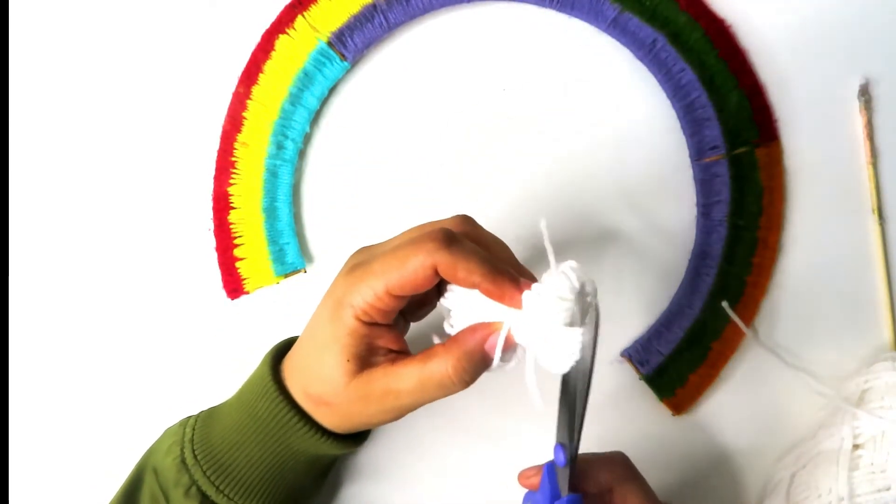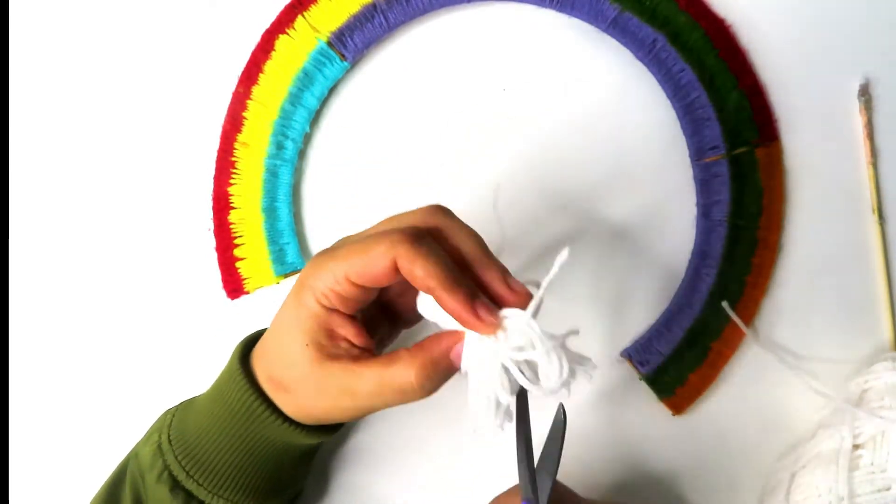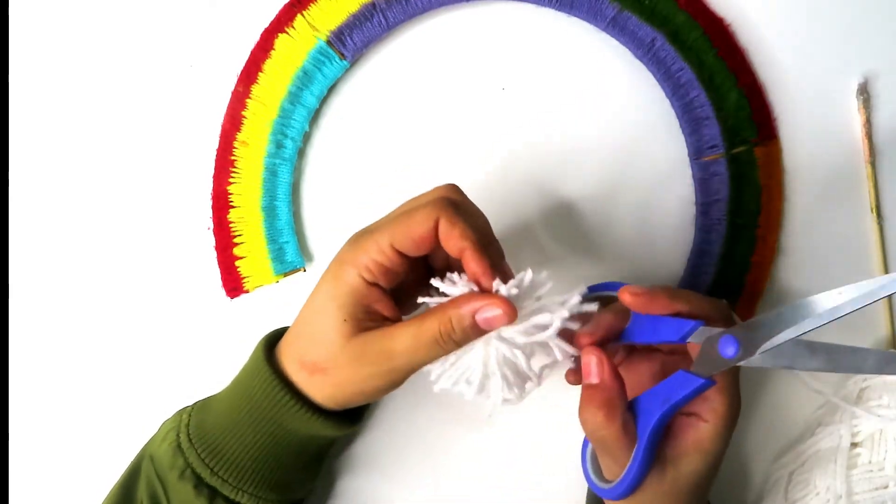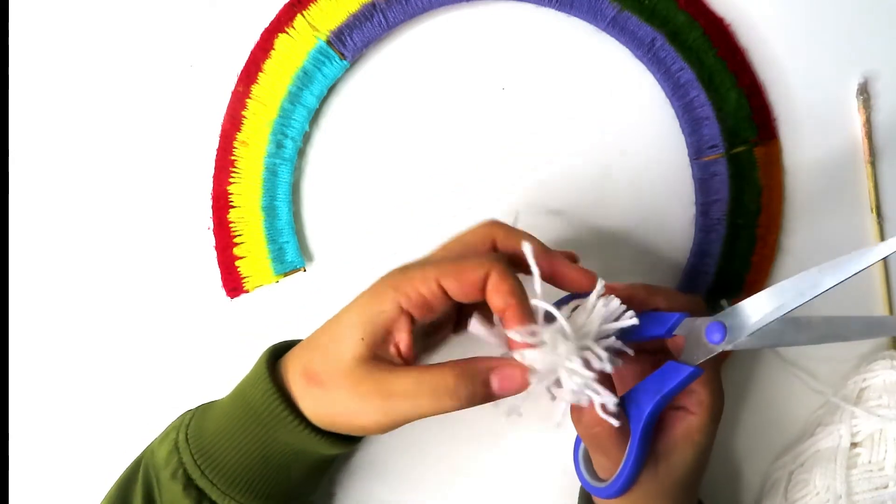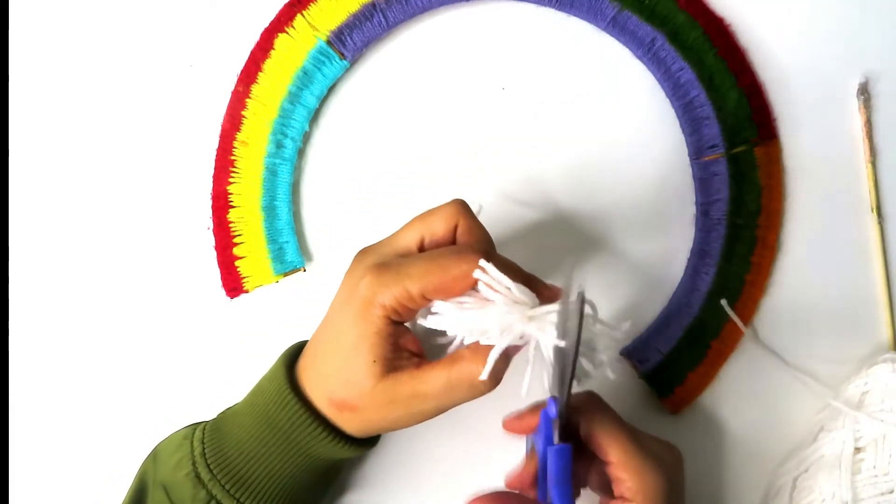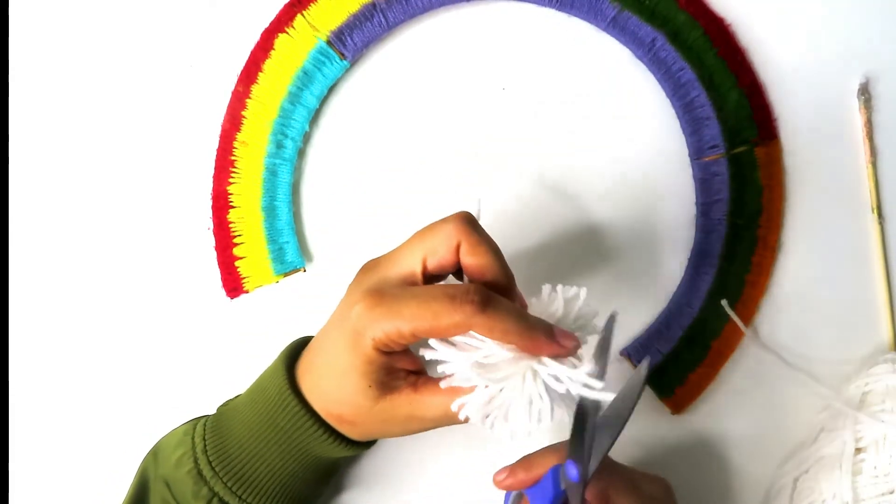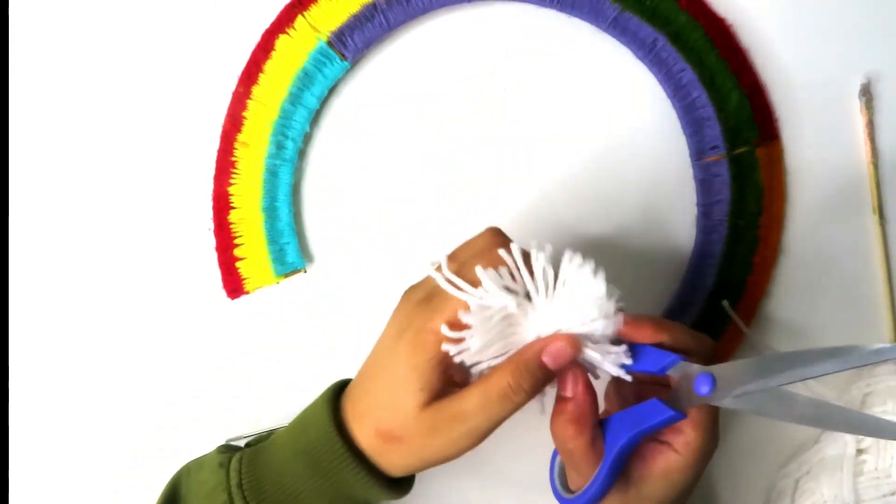Cut through each of the yarn loops. Flatten out your pom-pom and cut the strings in the shape of a circle. Then continue to flatten it out from different angles so your pom-pom will be in the perfect shape of a circle from any angle.